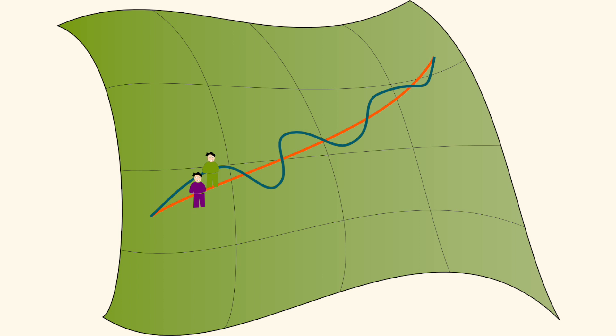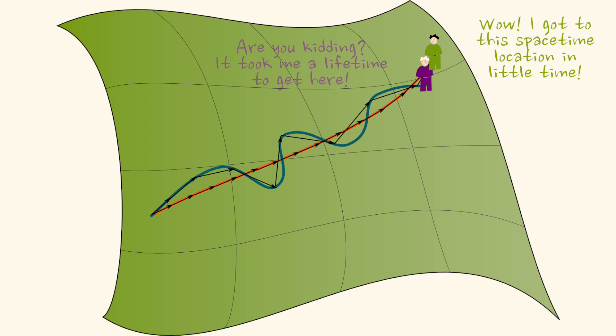Then, the amount of time that has passed along the slightly perturbed trajectory will always be smaller than along the straight-line trajectory. In some sense, by not following the straight space-time trajectory, you take longer steps within space-time at every second. Thus, it takes you less time to get from the starting point to the end point.